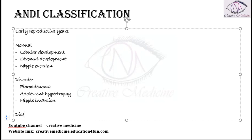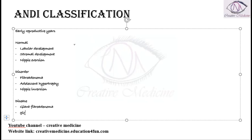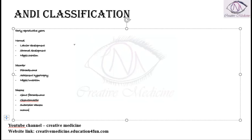What about the diseases which occur in Early Reproductive Years? Diseases include Giant Fibroadenoma, seen with Gigantomastia. Subareolar Abscess may be seen with Mammary Duct Fistula. These are the diseases we see.